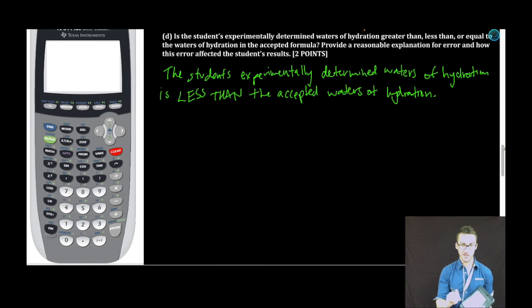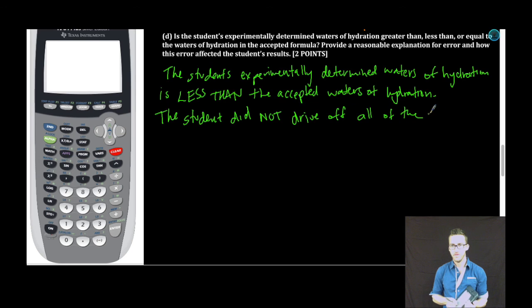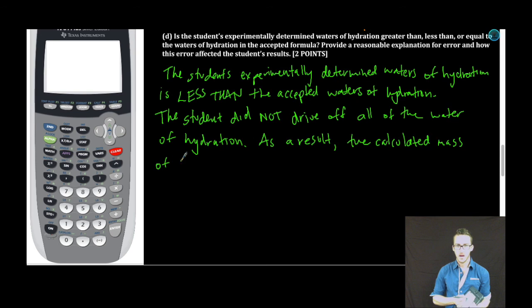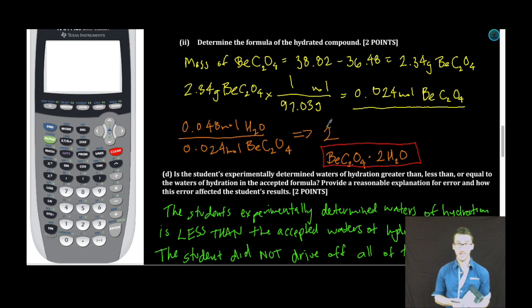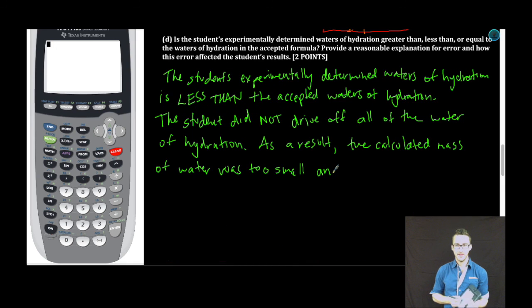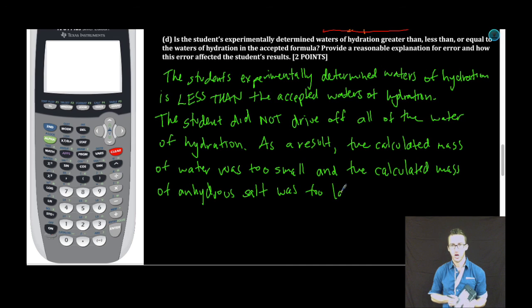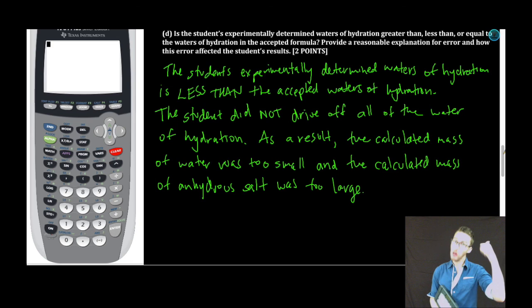Let's try to put that into words. Our reasonable explanation, the student did not drive off all of the water of hydration. So there is our reasonable explanation. How did this affect the results? As a result, the calculated mass of water was too small. Again, remember, we're thinking about this ratio. This has to be a ratio of three. So this is smaller than what it should be. We need this numerator to be larger. And the calculated mass of anhydrous salt was too large. We've answered the question. Less than. Provided a reasonable explanation and explained how that error affected the results. Free response done.